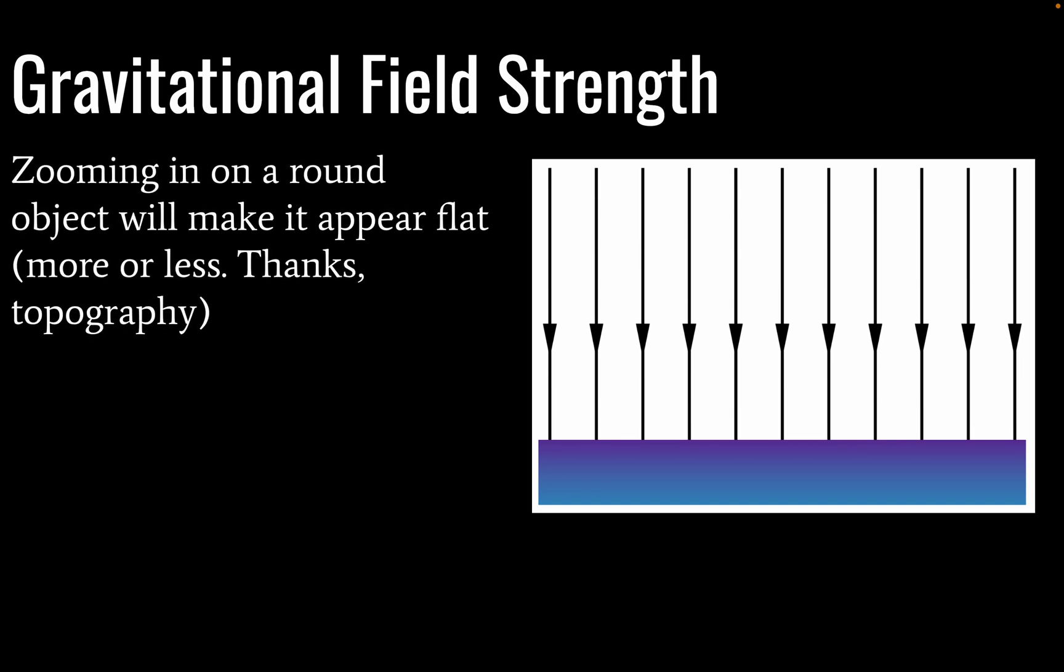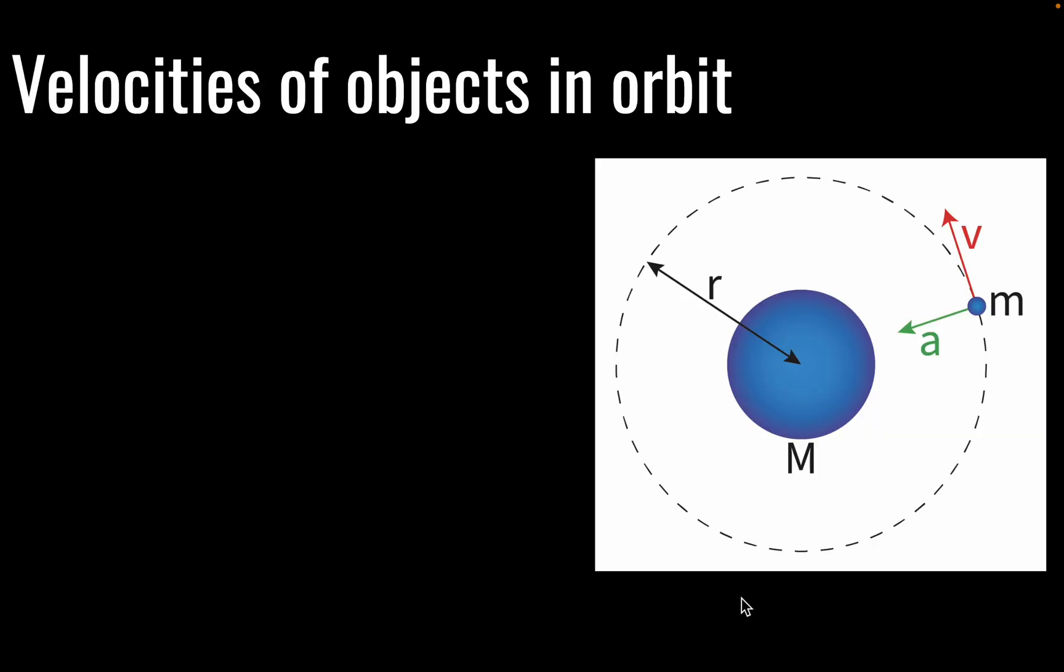If we zoom in on our round object, if we zoom enough, it's going to appear like a plane, a flat plane. More or less, if we're on a planet, there may be a mountain or two in the way, but it'll be flat-ish. So our field lines are perpendicular to the surface of our object, pointed toward the center. If you follow the field line, you're going to go to the center of mass, in this case the center of the planet.